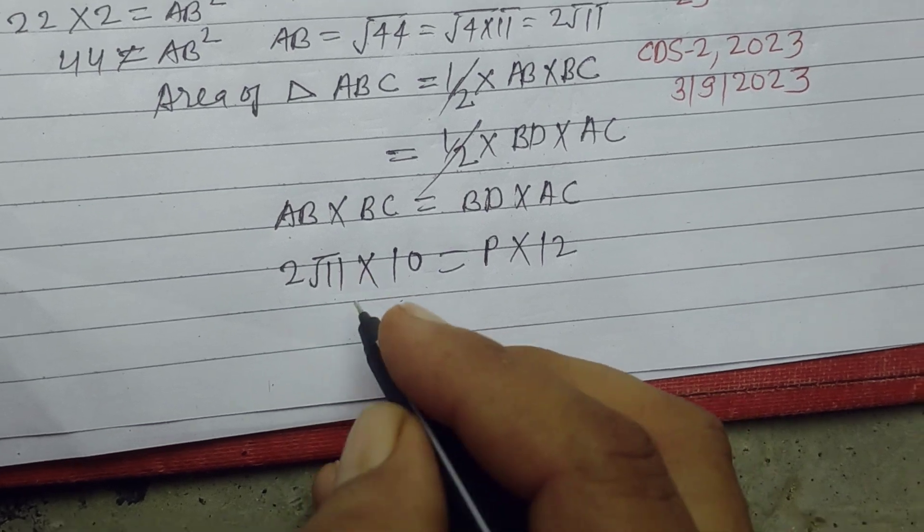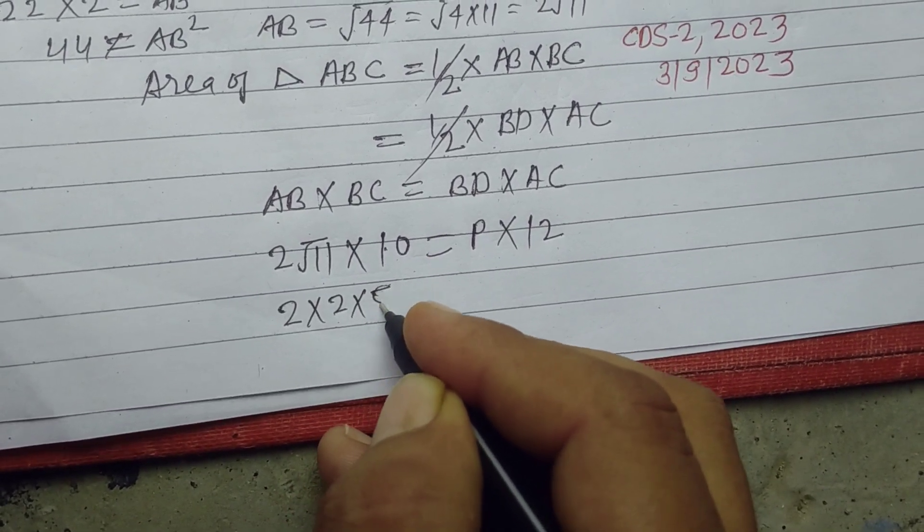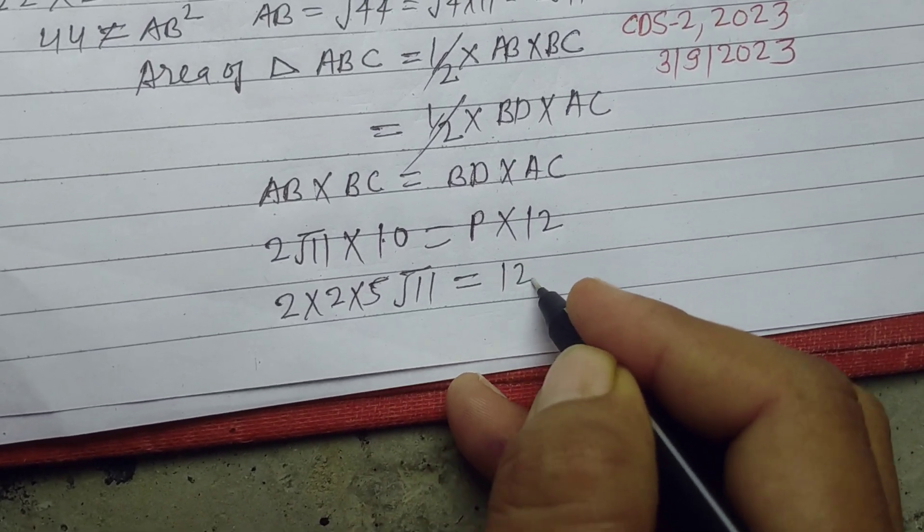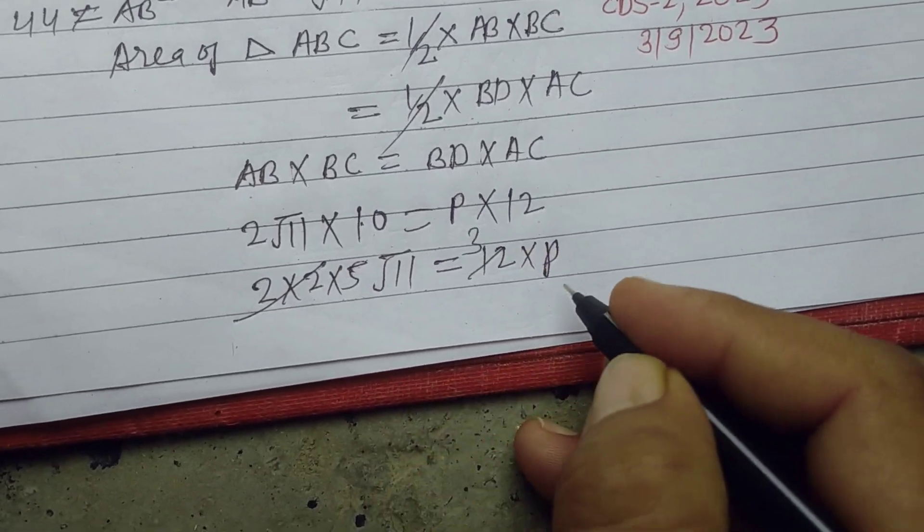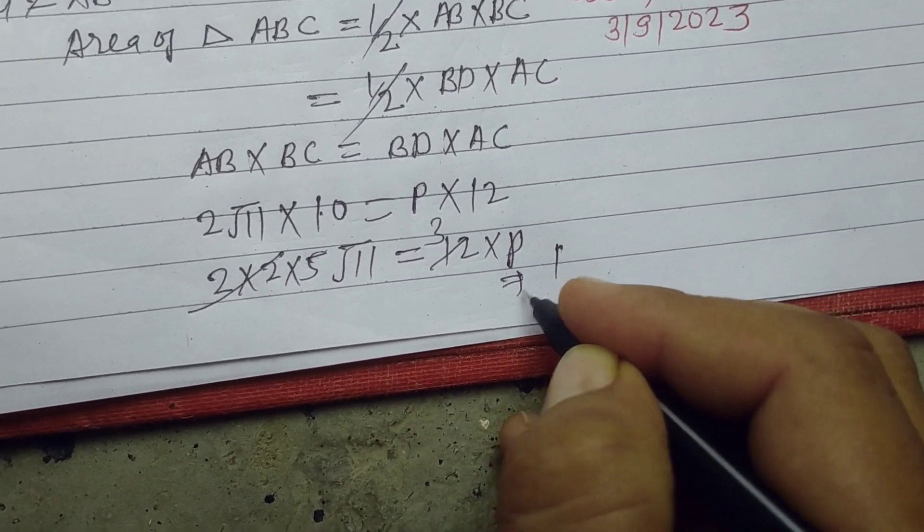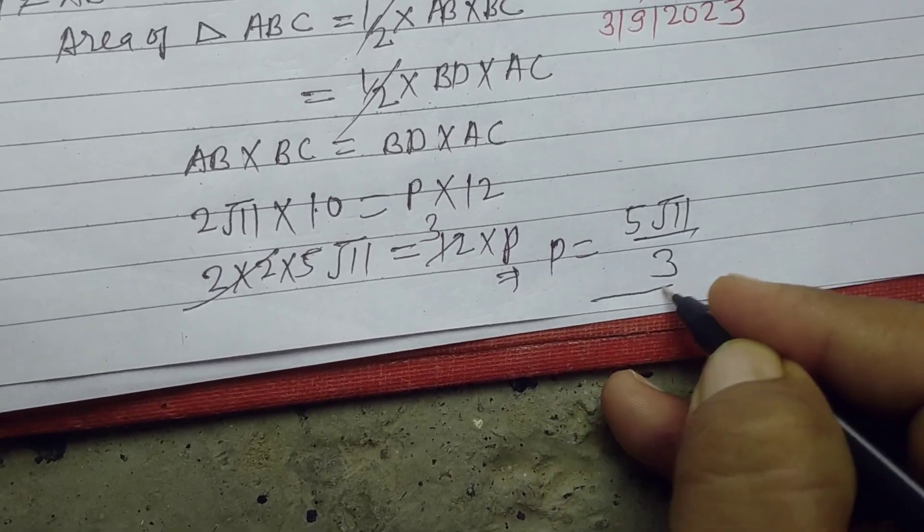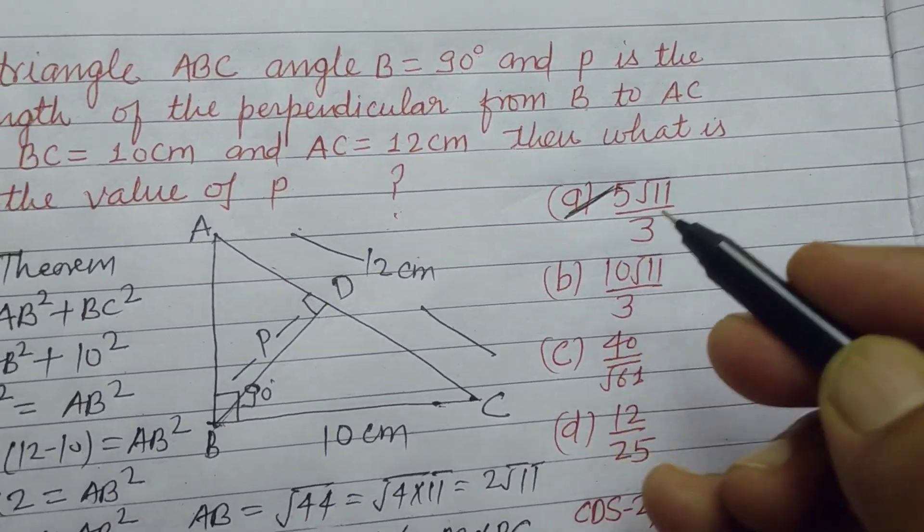So this can be written as 2 into 5 square root of 11 equals 12 into P. 12 is 4 into 3. Therefore P equals 5 square root of 11 divided by 3. This is the correct answer which is found in option A.